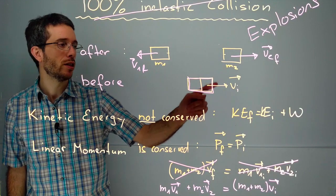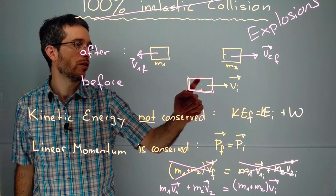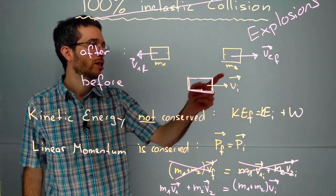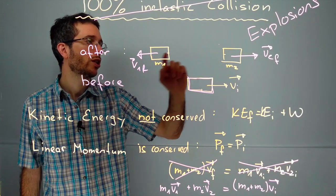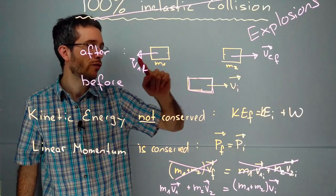So now before we have one object traveling at an initial velocity, and after the explosion we have two parts in which the object fell apart, moving in different directions.